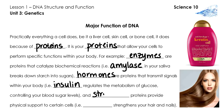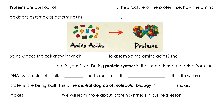An example of a structural protein would be keratin, which is responsible for giving your cells physical structure. Keratin is found in your hair and nails — you may have seen keratin-enriched shampoo products, which promote stronger, healthier hair. Proteins are built out of molecules called amino acids. The structure of the protein — how those amino acids are connected — determines its function.